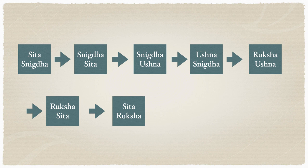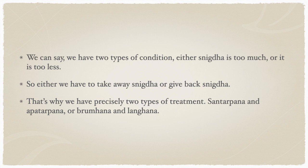There are two types of conditions: either snigtha is too much, going towards excess, or too less, going towards ruksha — both maintained relative to optimum agni. If there is too much snigtha, we have to take it away. If there is too little snigtha, we have to give snigtha back to the system. This is how we treat — that is why we have two types of treatment: santarpana and aptarpana, otherwise called brahmaana or langana.